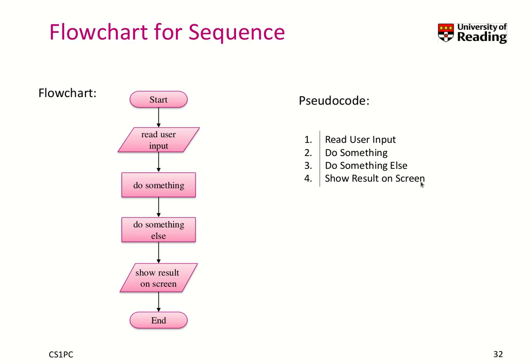That's very coarse-grained. Now, the next question is: what does 'do something' mean? It could mean calculate the diameter of a 3D shape object or something. So we write this down. The question would then be: how do we calculate it? Maybe we have a subset of steps, maybe we can find a math book, and so on and so forth. So we refine those individual steps until we know what they mean. Reading user input, in this case, could then mean the characteristics of the 3D shape that we input, that we want to calculate.